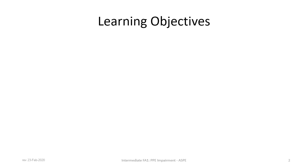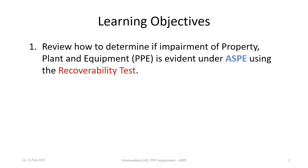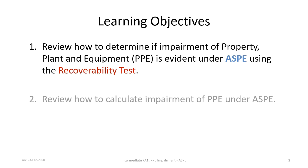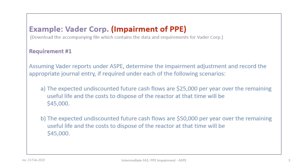There are two learning objectives for this tutorial. First, to review how to determine if impairment of property, plant and equipment (PPE) is evident under ASPE using the recoverability test. Second, to review how to calculate impairment of PPE under ASPE. This tutorial is based on the Vader Corp example — please download the correct file and review the data and requirements in advance. The tutorial focuses on requirement one: assuming Vader reports under ASPE, determine the impairment adjustment and record the appropriate journal entry under each scenario.